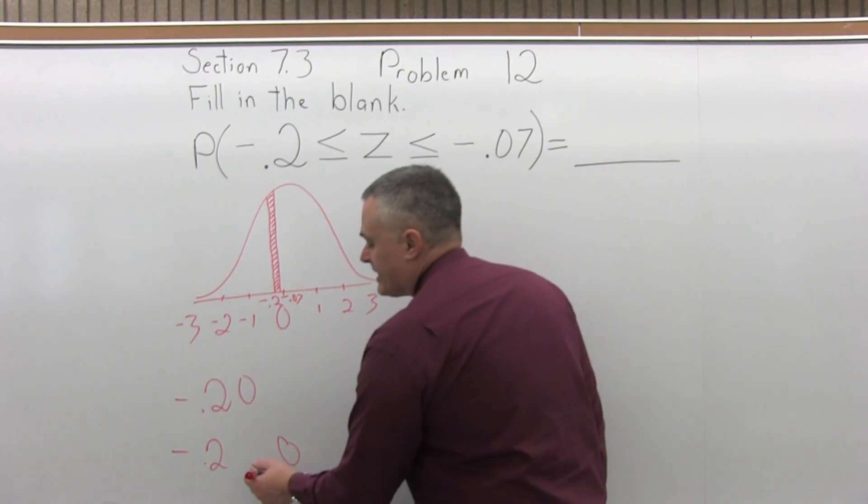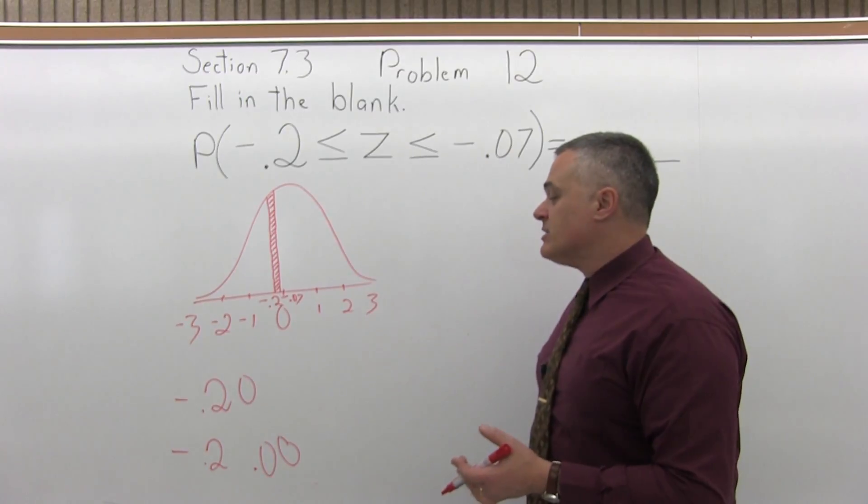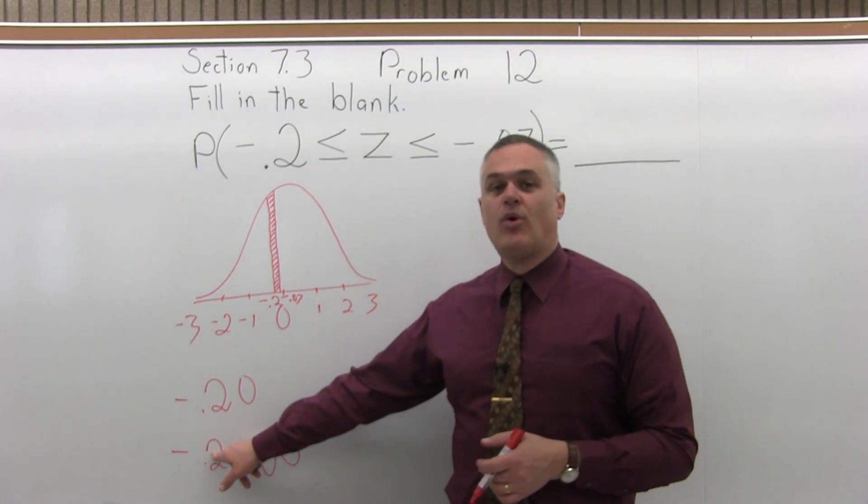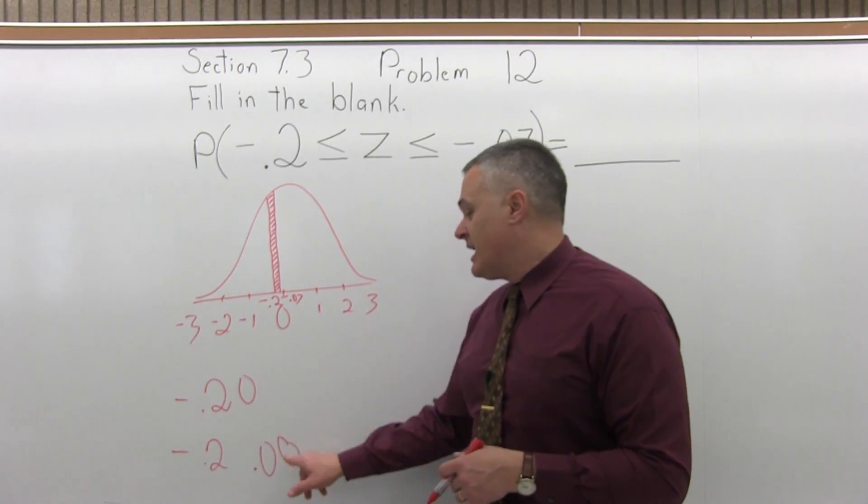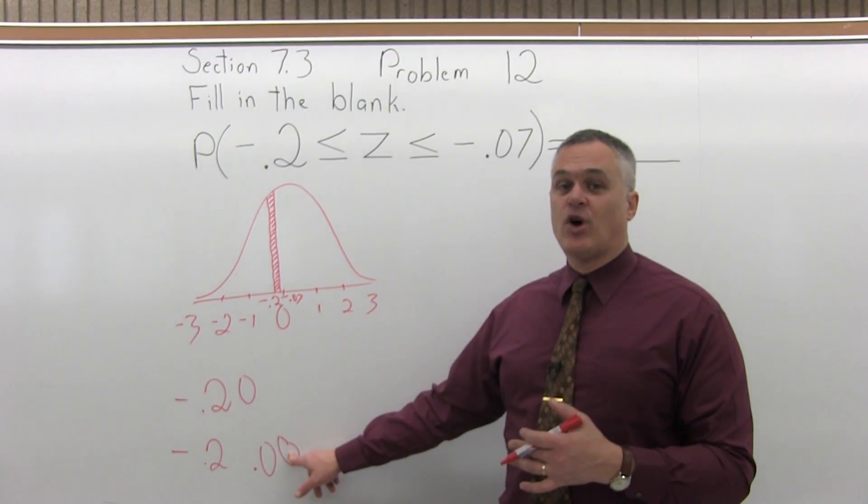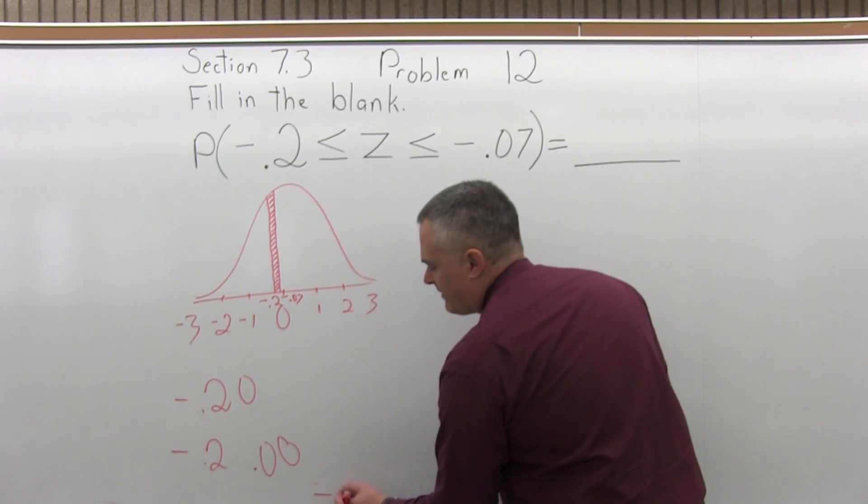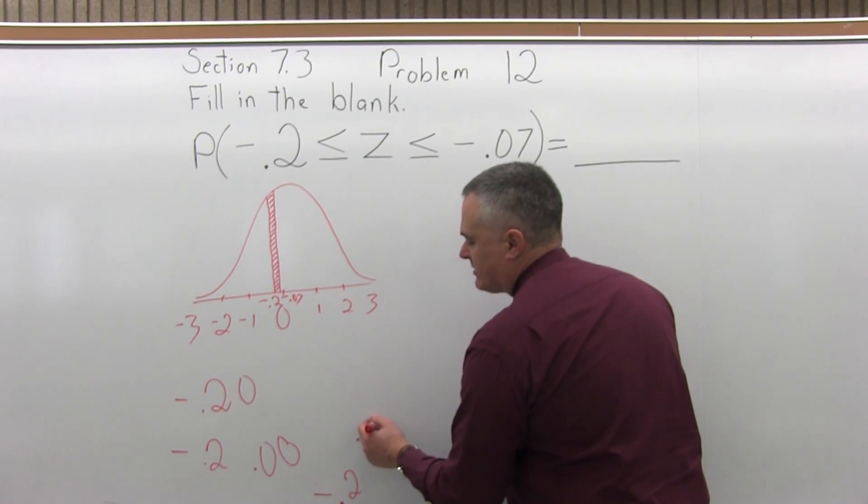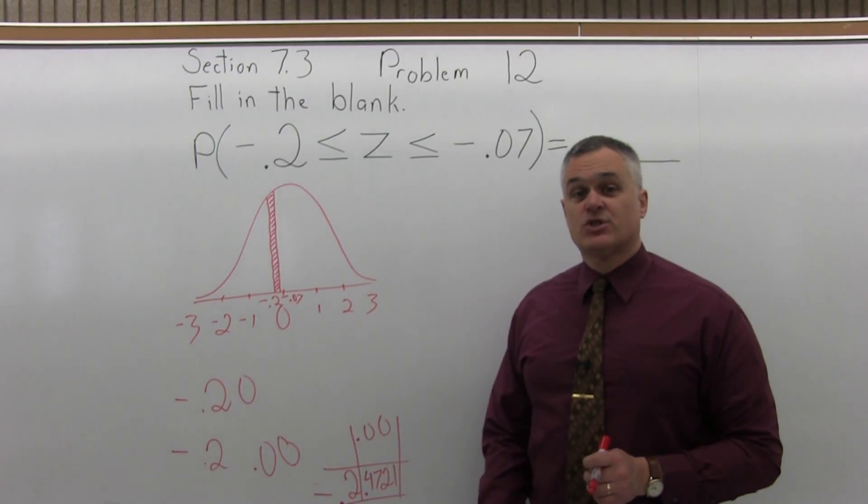The third step is I put a 0.0 in front of the rightmost digit that I pulled off. And now what I do is I go to the chart. I go to the negative 0.2 row, which is down near the very bottom of the negative portion of the chart. And I look in the 0.00 column, that's the far left column, and see where they intersect. So negative 0.2, 0.00. And if you intersect that row with that column, it should be 0.4721. So that's my first chart value.